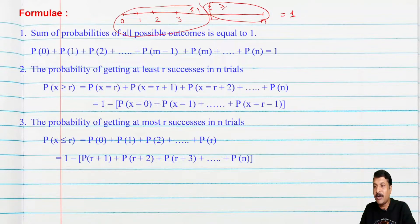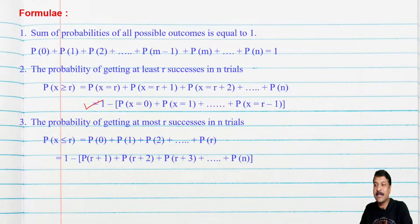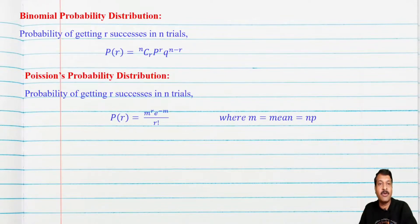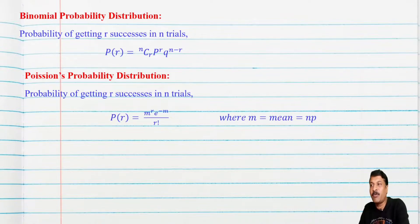The probability of getting at most r successes — that is P(X ≤ r) — equals P(0) + P(1) + P(2) + ... + P(r). Today's lecture focuses on the binomial probability distribution and Poisson's probability distribution. The normal probability distribution will be covered in a separate lecture.